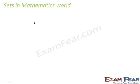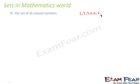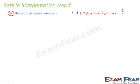Now let's see the application of sets in mathematics. When I say the set of all natural numbers — that is 1, 2, 3, 4, 5, 6, 7, 8, and so on — this is nothing but the set of all natural numbers. This is denoted by N, and this letter is widely used in mathematics. When you see N, it means it is a set of all natural numbers.